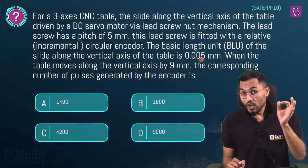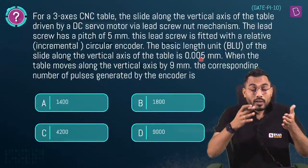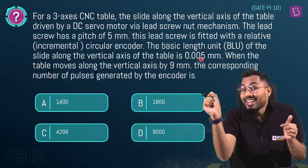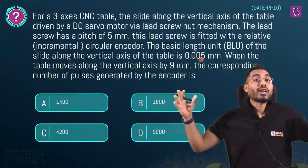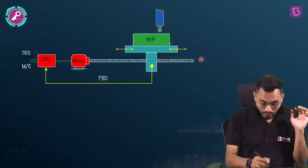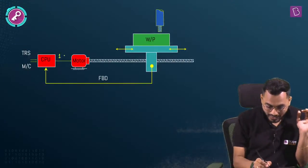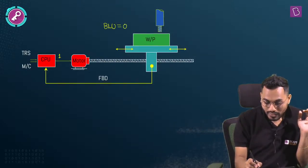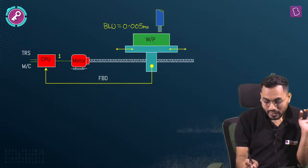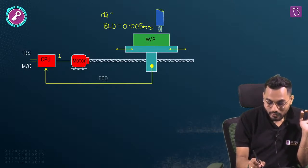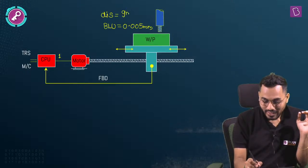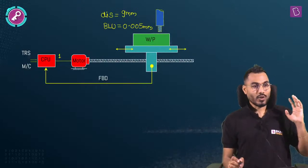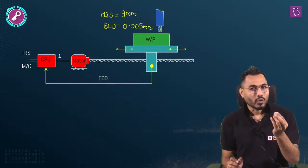BLU means: when one electrical pulse is sent, the linear distance advanced by the work table equals the BLU. So when one pulse is sent, the table travels 0.005 mm. We want to travel 9 mm — how many pulses are required?